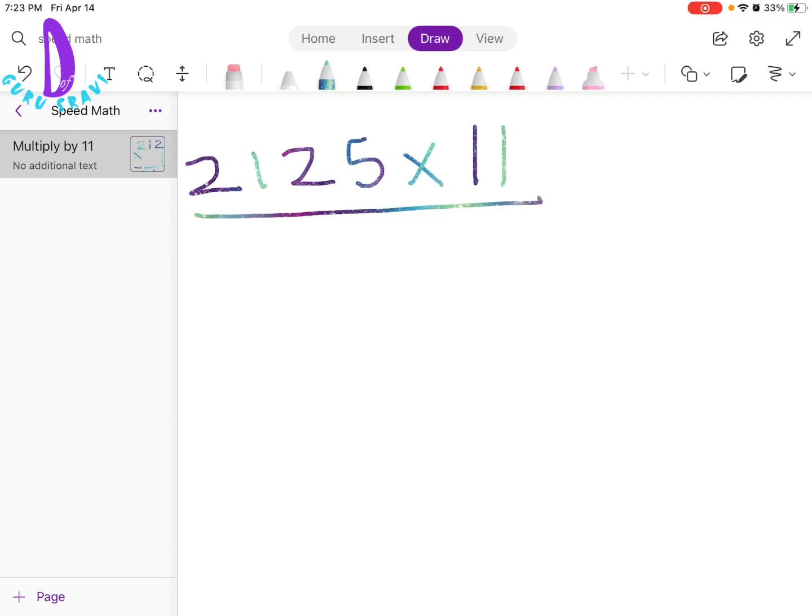To solve it the speed math way, we're going to pull down the 2. We're going to first write it like this and then we're going to pull down the 2 and just write it over here. Now, we're just going to add this to this, 2 to 1, 1 to 2 and 2 to 5 and we're going to bring down the 5 at the very end.